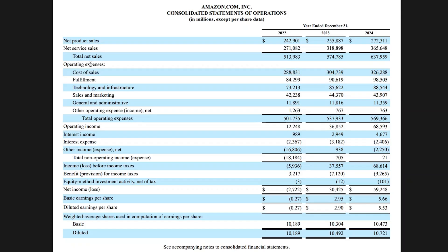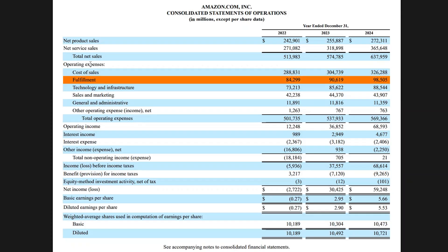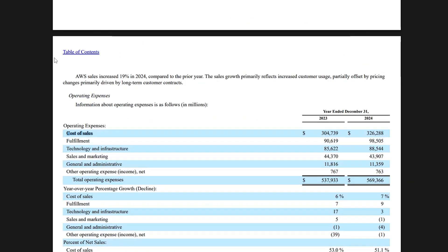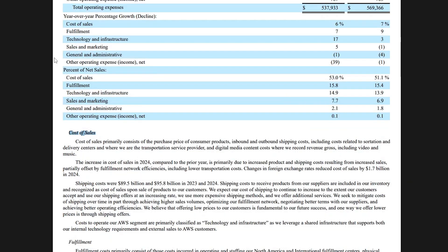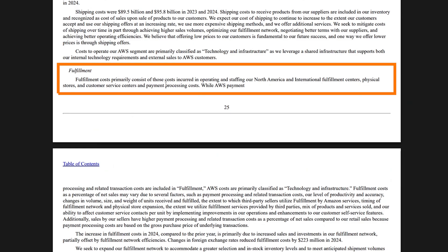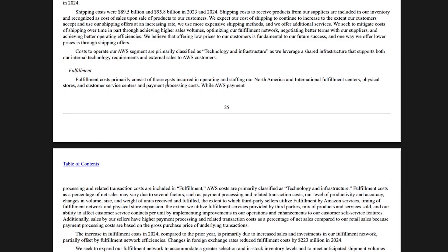Following cost of sales, we've got fulfillment — the warehousing costs and warehousing staff. We can press Ctrl+F and search for 'cost of sales' to get a full breakdown and definition. The same applies for fulfillment, which is defined as the costs incurred in operating and staffing the different fulfillment centers.